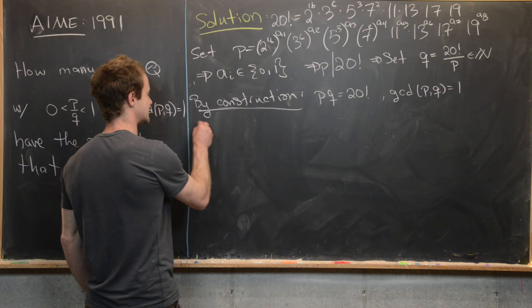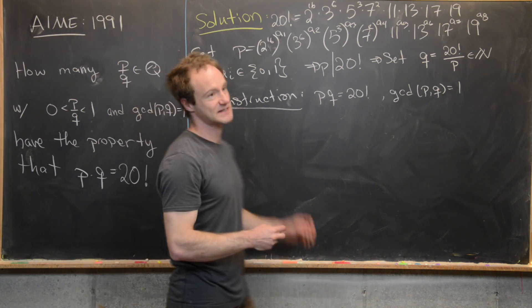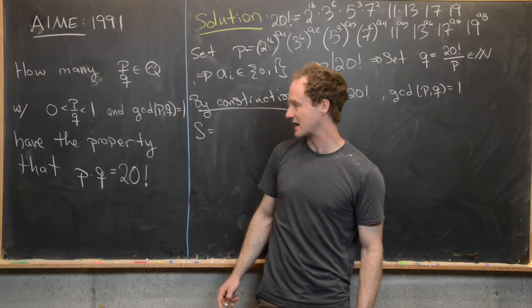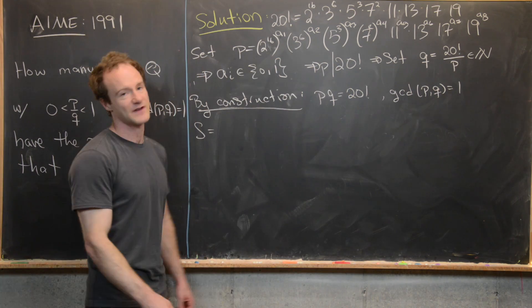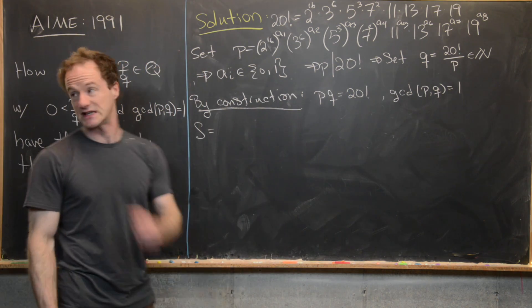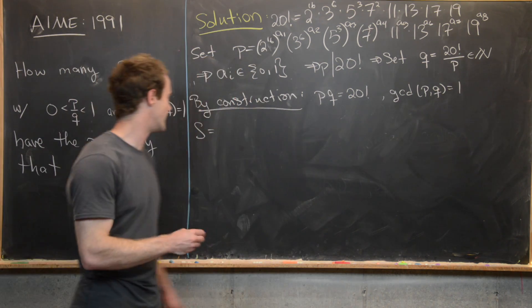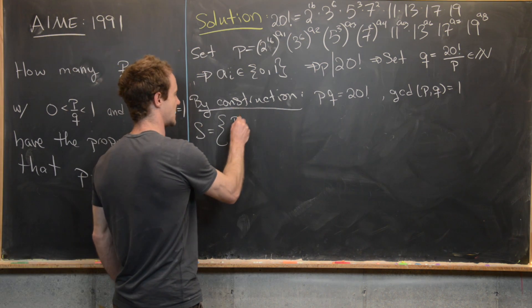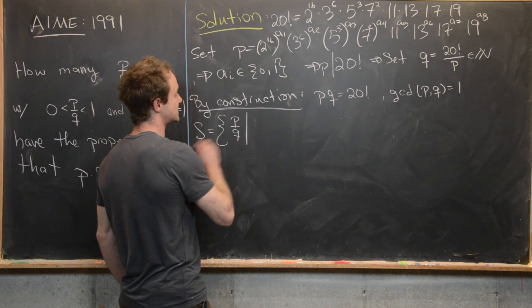Now the next thing that we want to do is consider a set. The set is like a bigger version of the set of numbers that kind of solve our problem. In fact, it's going to be all positive numbers instead of all numbers between 0 and 1. So we'll write S equals the set P over Q such that,